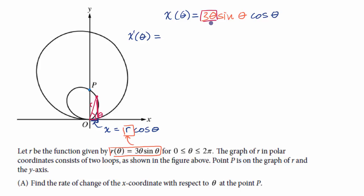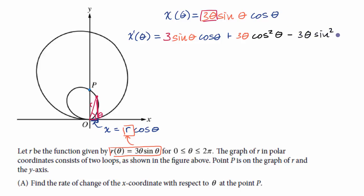We apply the product rule to three expressions, following the same pattern as with two factors. The first term is the derivative of three theta — which is three — times the other two expressions: three times sine theta times cosine theta. The second term is three theta times the derivative of sine theta, which is cosine theta, times another cosine theta, giving three theta cosine squared theta. The third term is three theta sine theta times the derivative of cosine theta, which is negative sine theta, giving negative three theta sine squared theta.